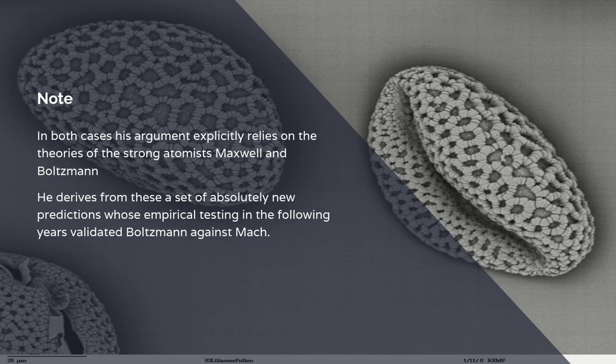In both cases, his argument relies on the theories of Maxwell and Boltzmann, and he derives from these an absolutely new set of predictions, whose empirical testing in the following years validated Boltzmann against Mach. In particular, he gives a formula for the photoelectric effect. Now, photoelectric effect seems something obscure at the time he was writing, but whenever you take an image with a modern camera phone, you're using the photoelectric effect. You're using the release of electrons in the semiconductor of the camera sensor when they're hit by light rays.